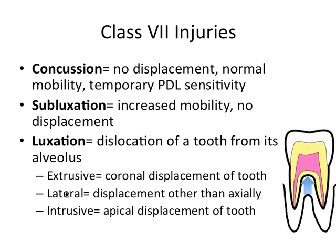Luxation can be extrusive, which is coronal displacement of the tooth as shown in this picture; lateral, which is displacement in any direction other than axially; or intrusive, which is apical displacement, the opposite of extrusive. Generally, extrusive has the best prognosis — only about 65% of cases become necrotic. Lateral comes in second with 80% necrotic, and intrusive is last with 96% necrotic. The pulpal outcome is generally more favorable for an open apex due to increased blood flow.